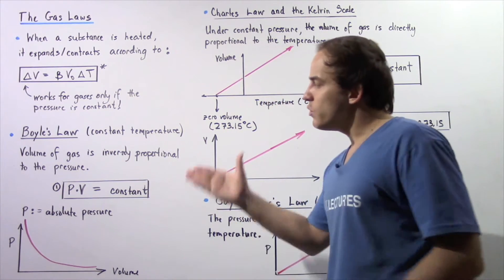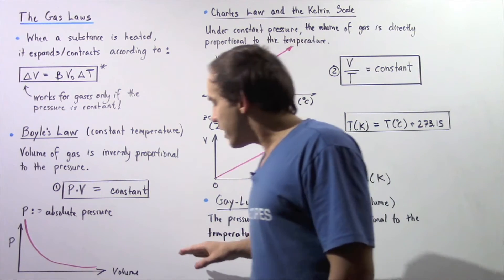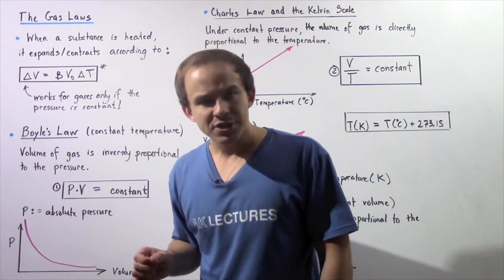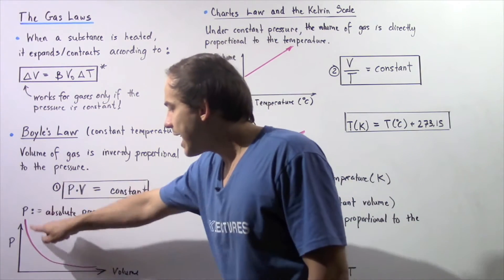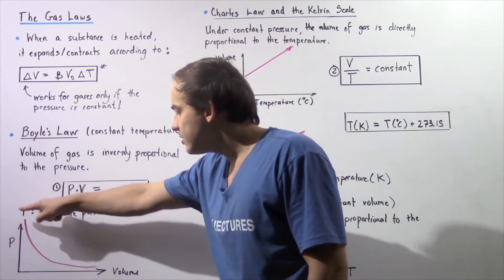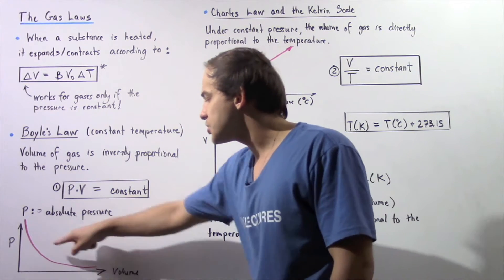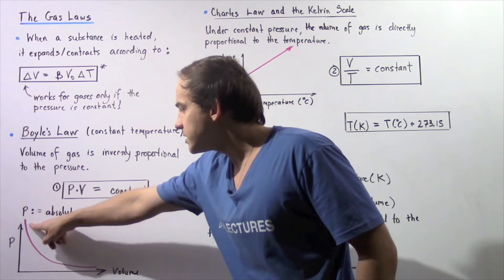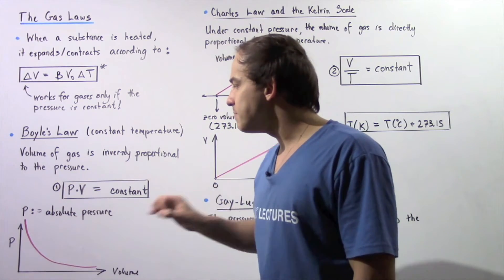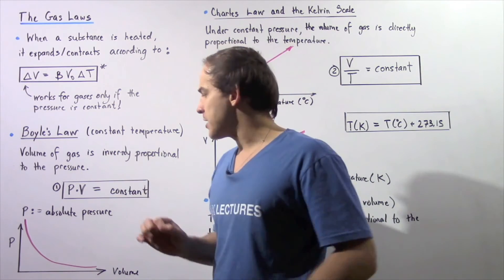We can represent this relationship on the x-y plane. Our x-axis is the volume, the y-axis is the pressure, and we see that we get the following curve. As our pressure increases, the volume decreases. Likewise, as the volume increases, the pressure will decrease according to the curve. Note that the pressure we are talking about is the absolute pressure, not the gauge pressure.